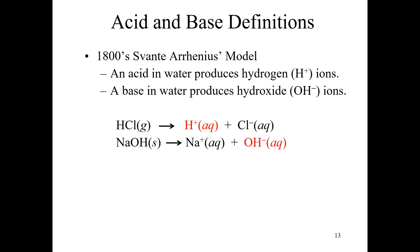To try to get a definition of what an acid or a base are, we can start back in the 1800s with the model of Svante Arrhenius. This definition relies on the question: what happens when I put the substance in water? An acid in water produces hydrogen ions, and a base in water produces hydroxide ions. You can see this with HCl and NaOH — they ionize to hydrogen and chloride ions, or to sodium and hydroxide ions, respectively.